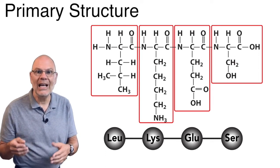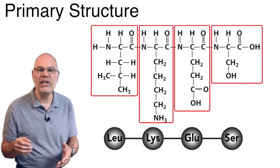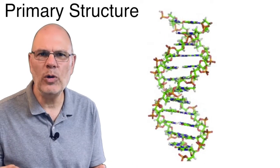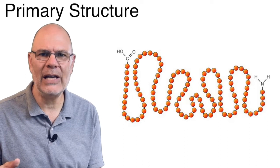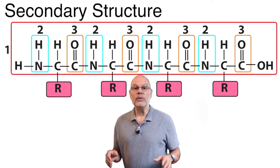the sequence is leucine, lysine, glutamic acid, serine. That sequence was encoded in DNA, and it can involve hundreds or thousands of amino acids. Secondary structure comes about